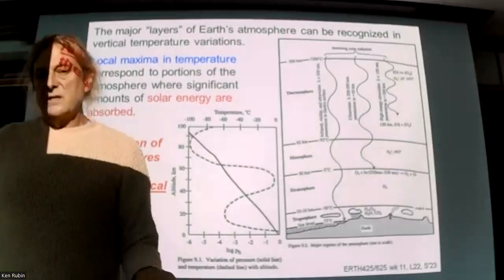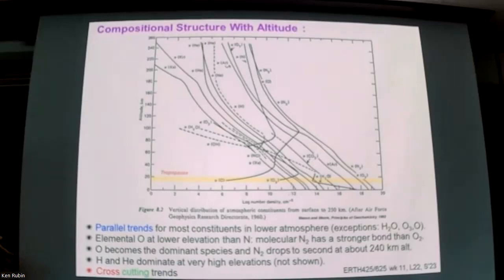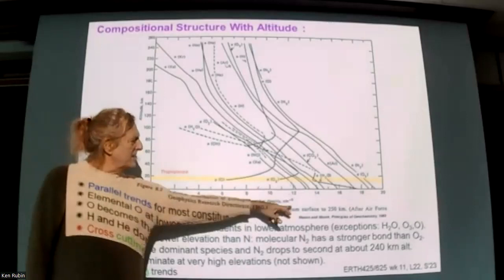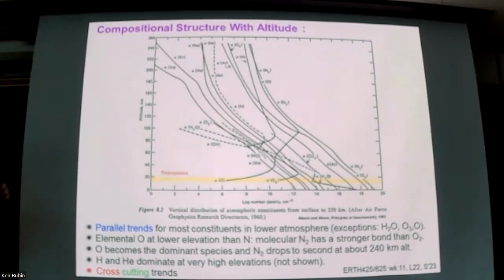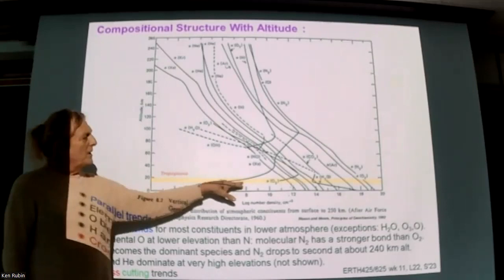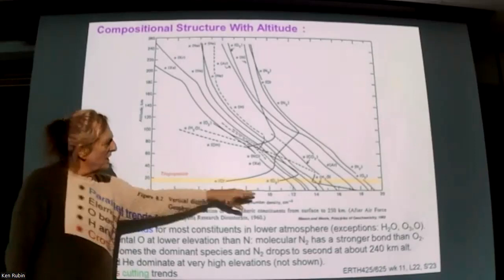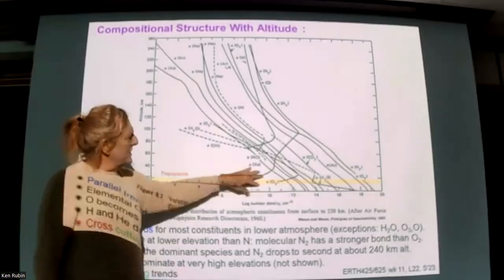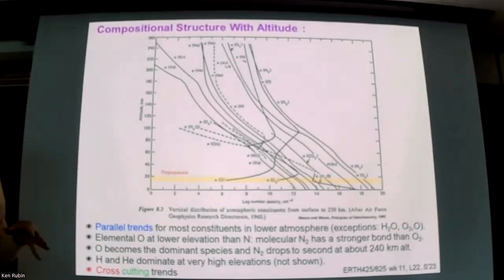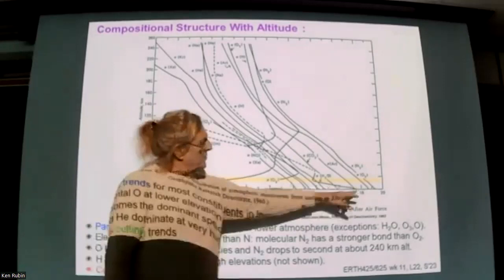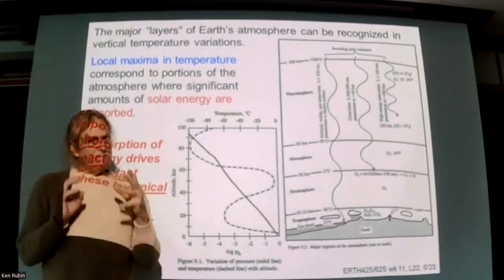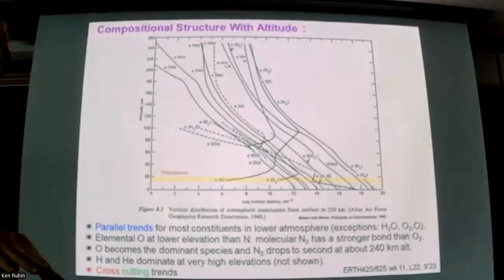This plot shows the global composition of the atmosphere — it's a log scale of number density per cubic centimeter versus altitude, with the tropopause labeled. The stuff we interact with is everything below this yellow line. There are three categories of trends: lines parallel to each other, like N2 and O2, which basically just decrease as we go up reflecting the monotonic decrease in pressure; most major gas species don't have a ton of chemistry, so they simply decrease in concentration.